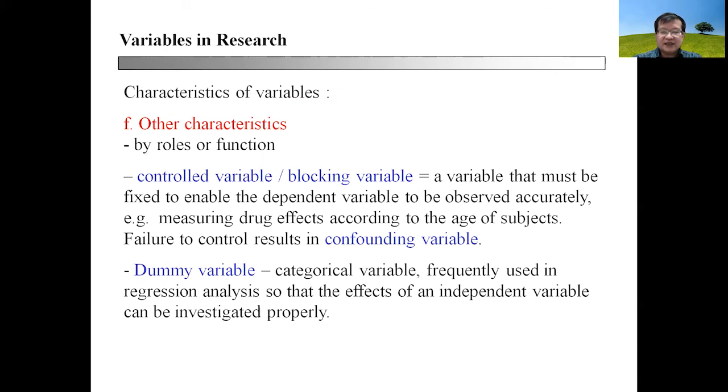Finally, the last characteristic of variables will be other characteristics accorded by rules or function. You can have controlled variable or a blocking variable. This means a variable that must be fixed to enable a dependent variable to be observed accurately. For example, if you want to compare the effects of age and sex for a drug, you need to fix the factors of age.